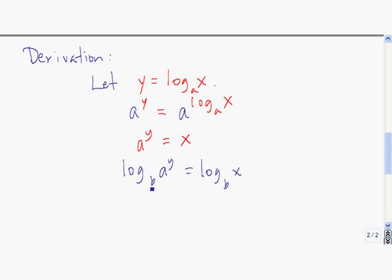Again using properties of logs, we can take this exponent and bring it out front. So we have y times log base b of a is equal to log base b of x. We can solve for y here by dividing both sides by log base b of a.